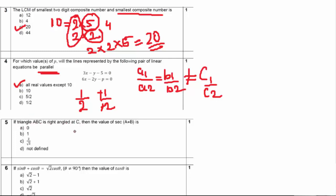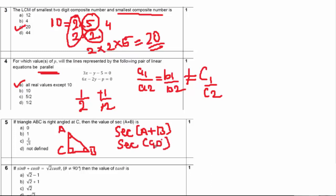Question number 5: in triangle ABC right-angled at C, find the value of sec(A+B). Since angle C = 90°, by the angle sum property A + B = 180° − 90° = 90°. So we need sec 90°. Since cos 90° = 0, sec 90° = 1/0, which is not defined. I have a separate video explaining the trigonometric table trick if you want to learn that.